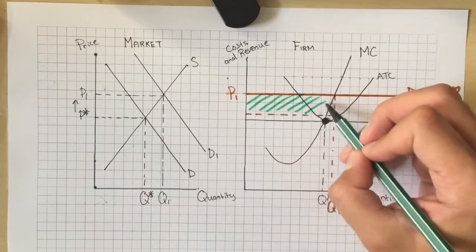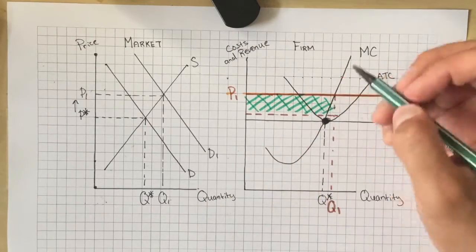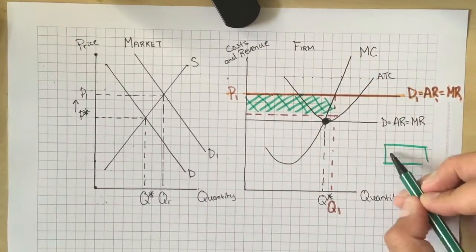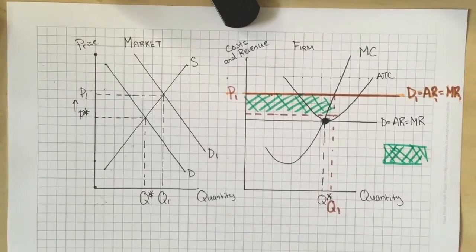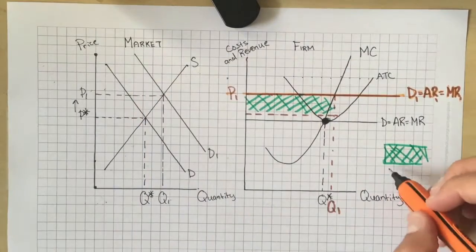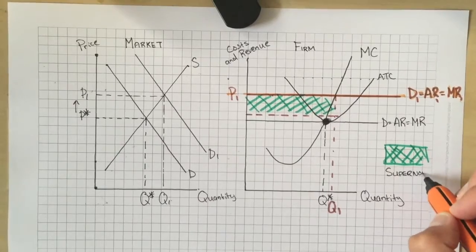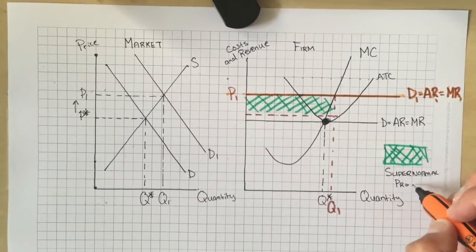If you play this video backwards you'll be able to see what would happen if demand decreased in this market. The main thing I wanted to show you is we started off in long run equilibrium and made our way to the short run situation with supernormal profit.